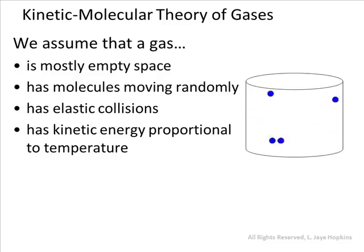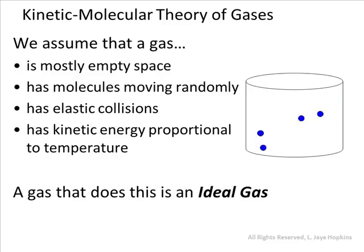These four assumptions define a perfect or ideal gas. If a gas is mostly empty space, its molecules move truly randomly, it has elastic collisions, and kinetic energy proportional to temperature, we say it's an ideal gas. In reality, gas molecules don't perfectly fit this model, but under many conditions — like atmospheric oxygen — they do act like ideal gases. For this unit, we'll assume all gases follow ideal gas behavior and abide by the kinetic molecular theory of gases.